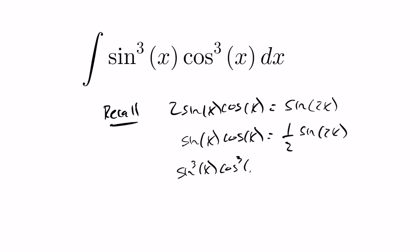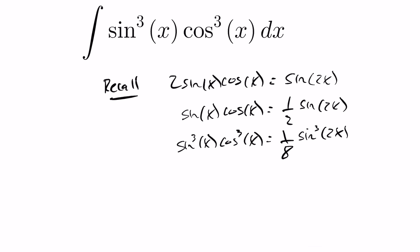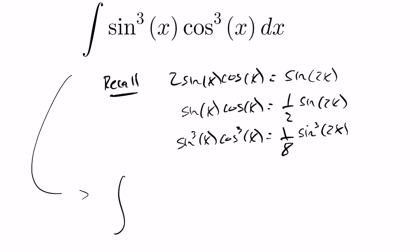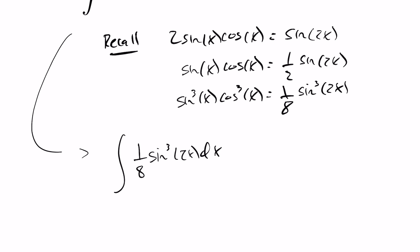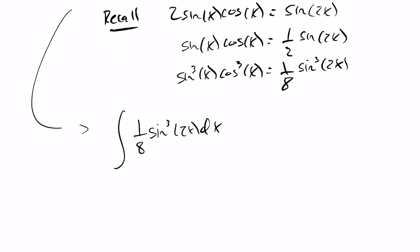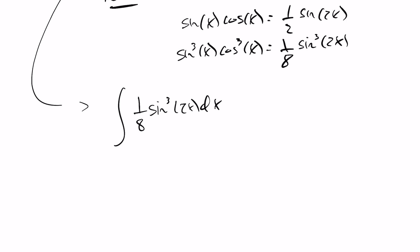So doing this substitution right away, you've kind of simplified this a bit. This would be 1 eighth the sine cubed of 2x dx. Looks a little cleaner. And now you don't have the product of two trig expressions to have to work with here, just the 1. So I'm going to go ahead and factor that 1 eighth out.